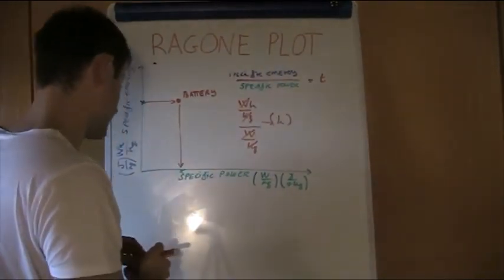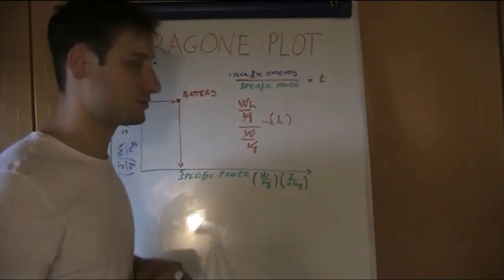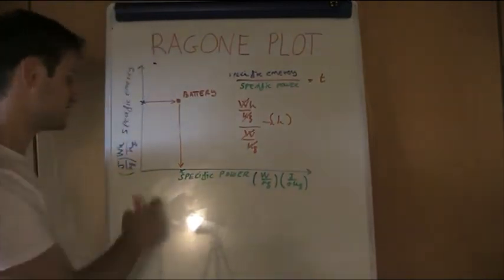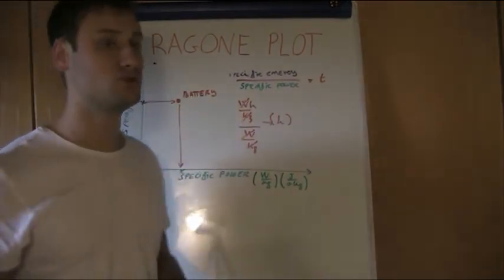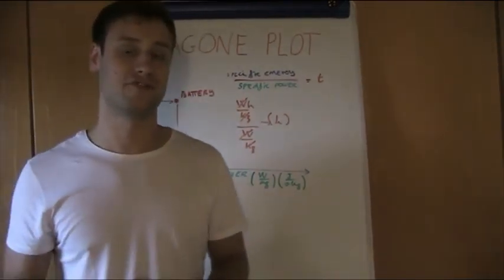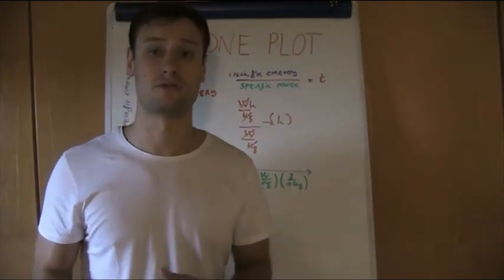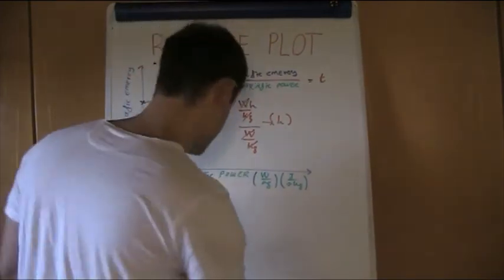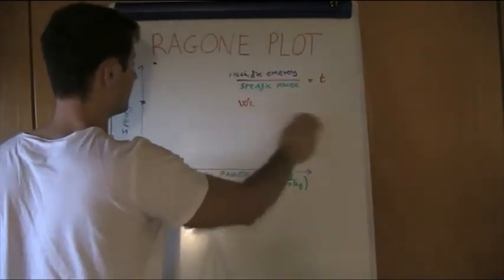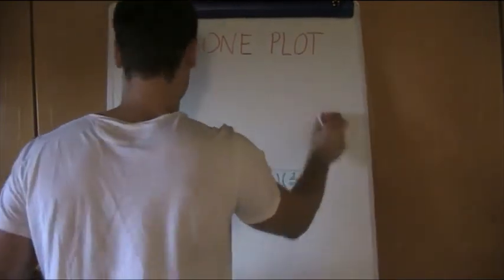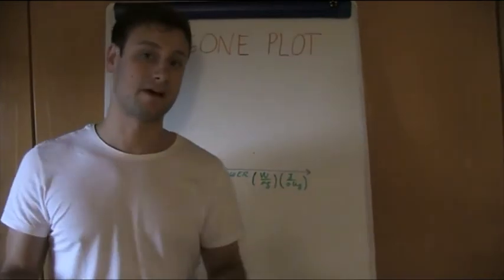It's important to remember that the Ragone plot is a logarithmic plot. Because the units of measure are in logarithmic form, we are able to compare very different types of electrical devices in terms of performance. A classical example associated with the Ragone plot is the difference between a battery and a capacitor.